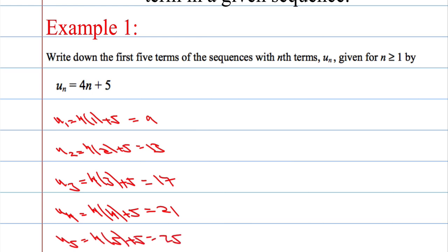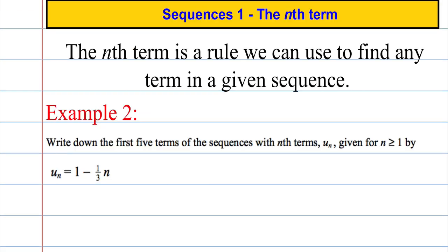So we just substitute different values of n in. If I wanted to know what the 20th term is, I would work out u(20) — we substitute the value of n equal to 20 in. Let's have a look at a second example here.